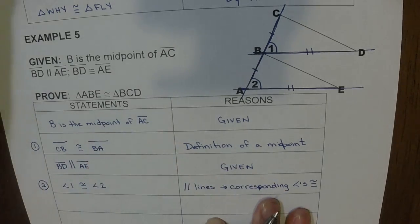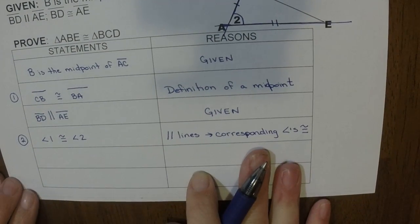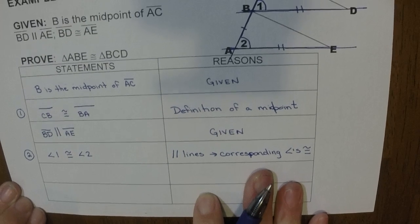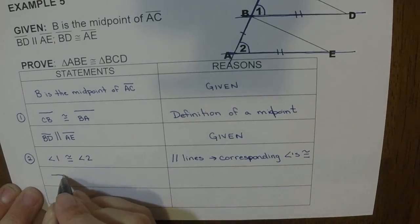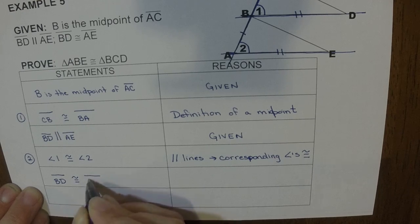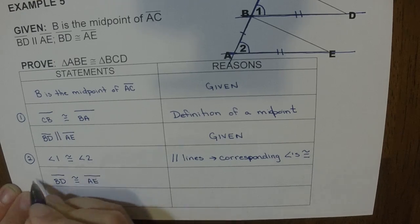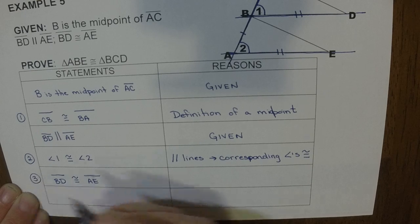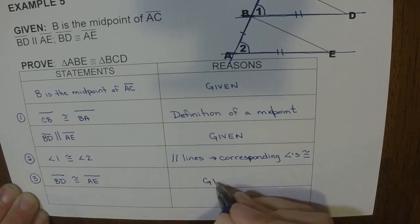So that is a congruency. So we move on to our last given, which is kind of the easy one since they told us what it was. So we would say segment BD is congruent to segment AE. This is a congruency, and our reason is just given.